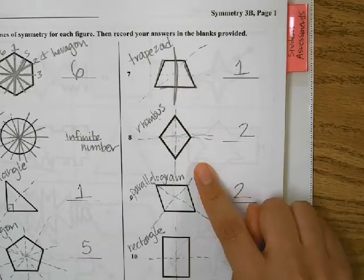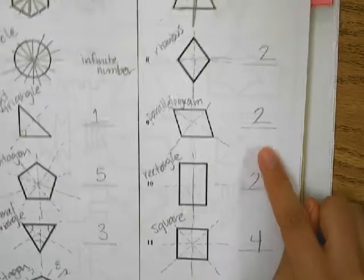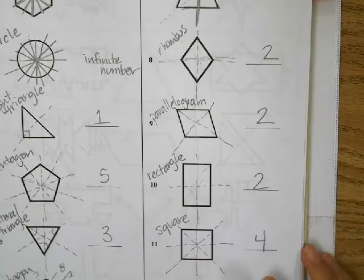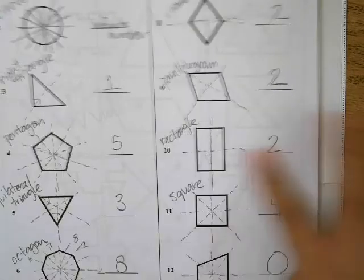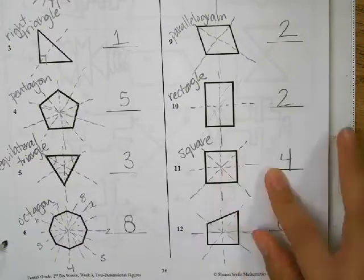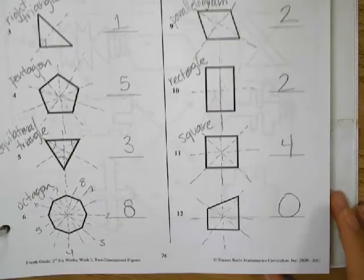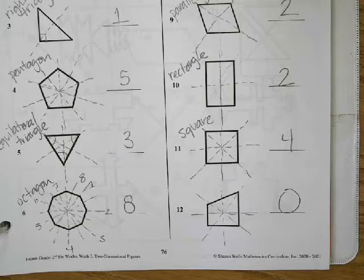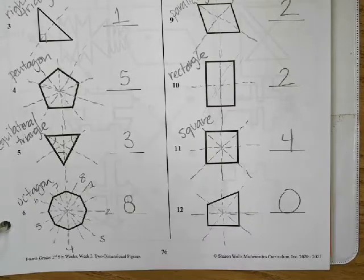A rectangle has two, a square has four—we could fold it four different ways and it would be perfectly the same on both sides. This last one, a trapezoid, had zero lines of symmetry.